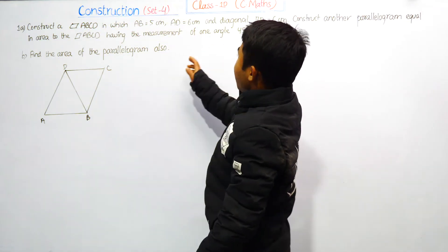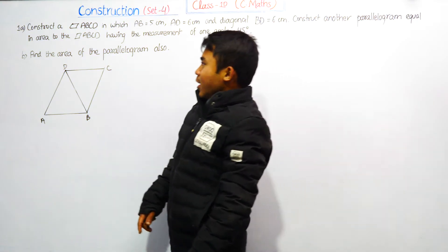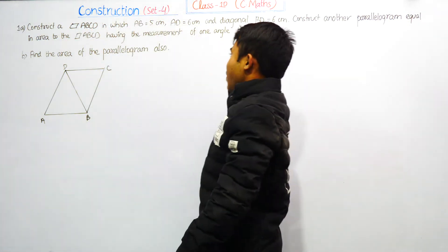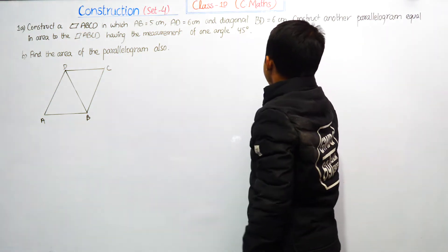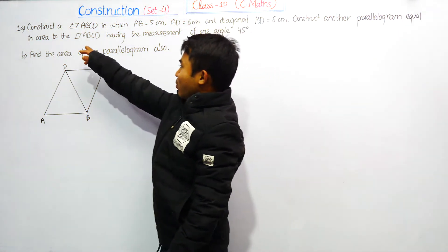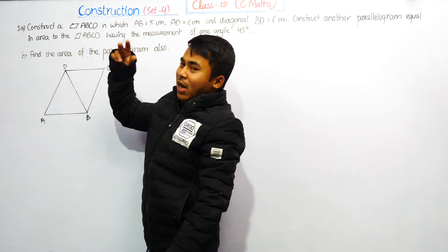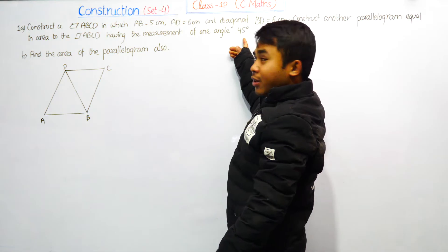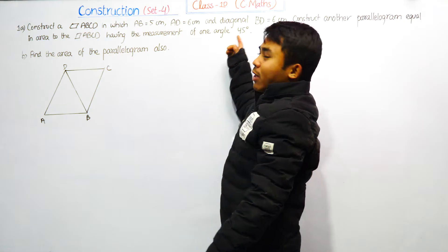We will solve the following question. Construct a parallelogram ABCD in which AB is equal to 5 cm, AD is equal to 6 cm, and diagonal BD is equal to 6 cm. Then construct a parallelogram equal in area to parallelogram ABCD, having one angle equal to 45 degrees.